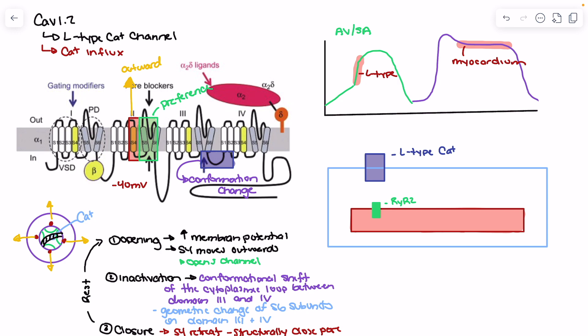As we have prolonged depolarization and increasing calcium entering the cell, tension builds in the cytoplasmic loop between domain 3 and domain 4. That tension causes a conformational change that shifts the cytoplasmic loop position and the S6 subunits. The cytoplasmic loop flips up — it's not a physical plug like the IFM motif in sodium channels, but its positioning prevents calcium from fitting through. The S6 change is almost like a lock-and-key mechanism altering the shape so calcium can't pass.